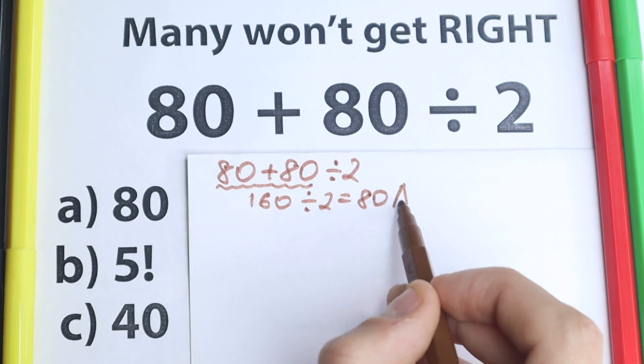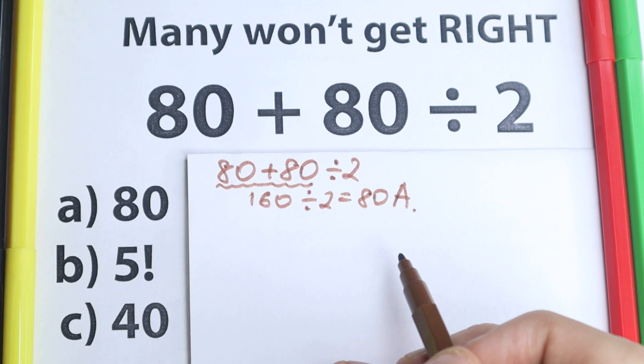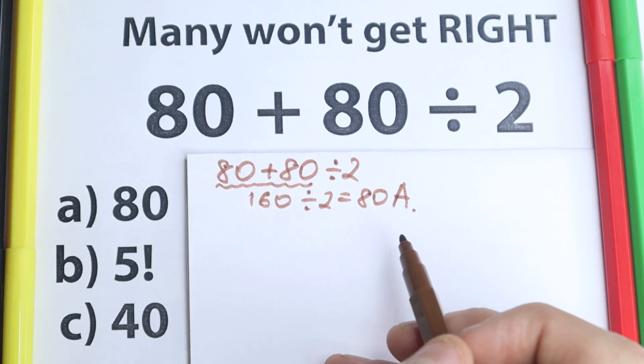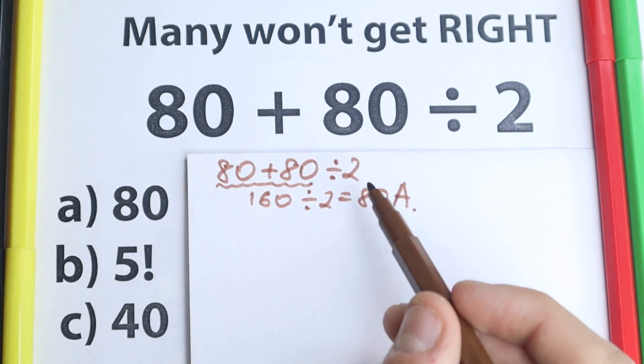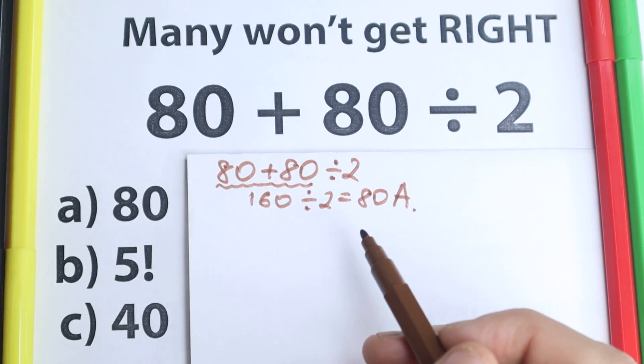So one part of students solve it like that, they say correct option is A. And right now I don't tell that this is correct or incorrect, I suggest you to pause the video real quick and try to solve it by yourself.